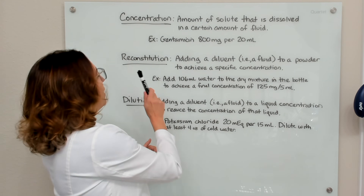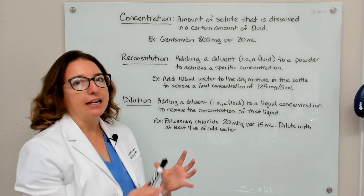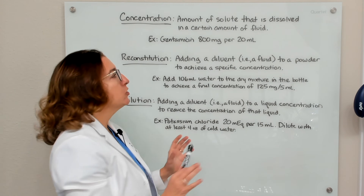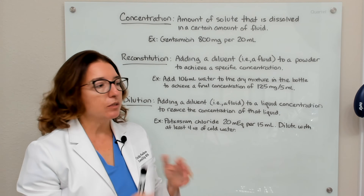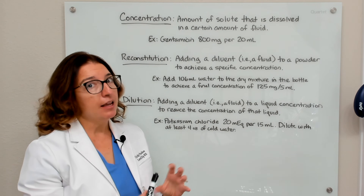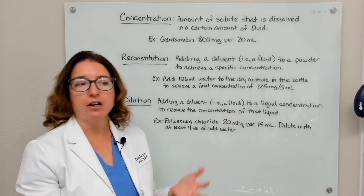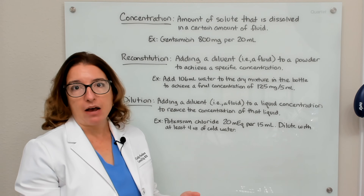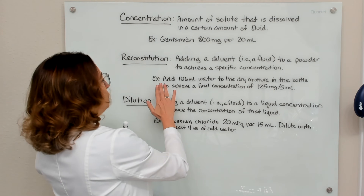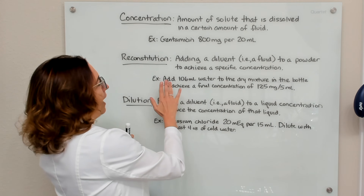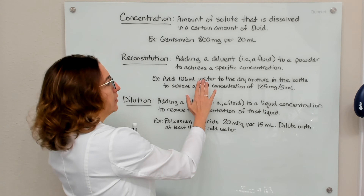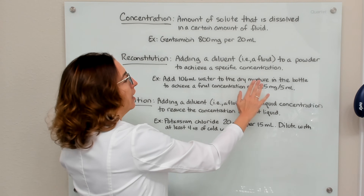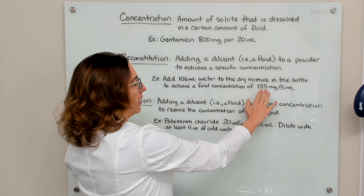When we are talking about reconstitution, that involves adding a diluent — a fluid — to a powder to achieve a specific concentration. So it's not liquid, it's a powder. On the label, it will give you the instructions on how many milliliters to add to reconstitute that powder. For example, you might see instructions that say: add 106 milliliters of water to the dry mixture in the bottle to achieve a final concentration of 125 milligrams per 5 mL.